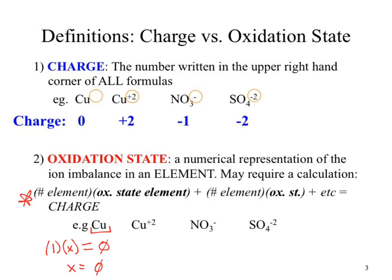What happens when we move to the next one? How many elements do we have? We have one copper. What's its oxidation state? X. What's its charge? Plus two. Solve for X — X is plus two. What's the oxidation state on copper? Plus two. So the charge ends up being the same. What happens when we move to nitrate?